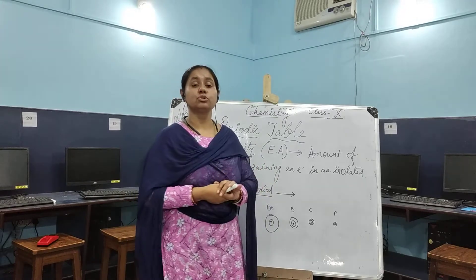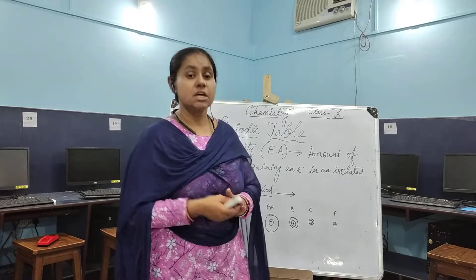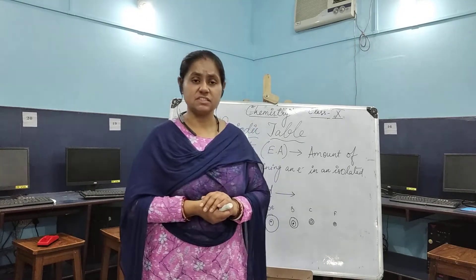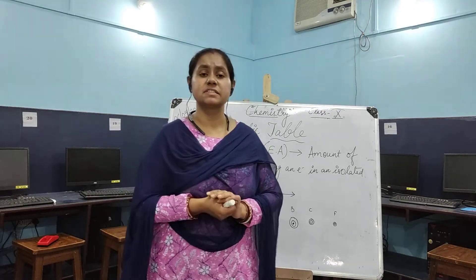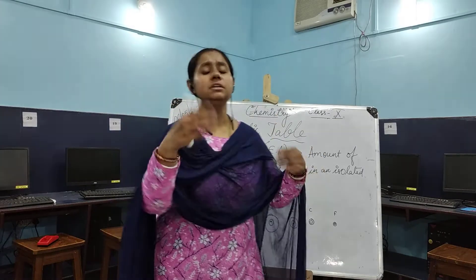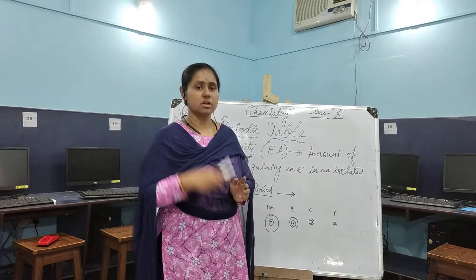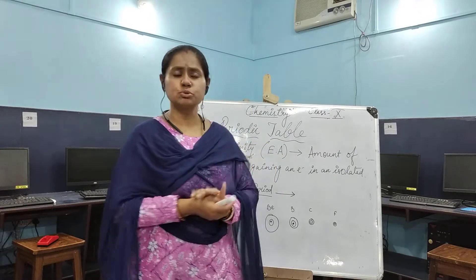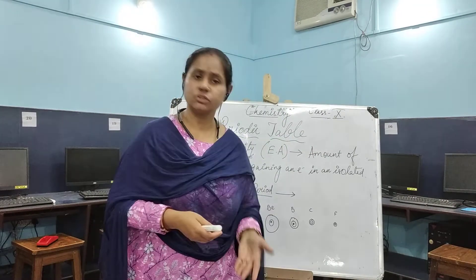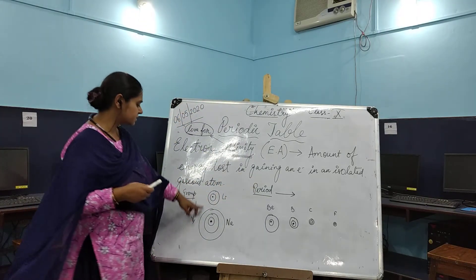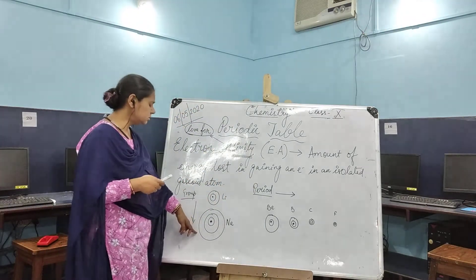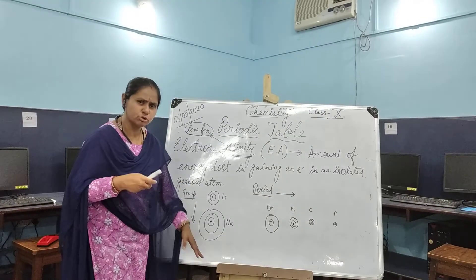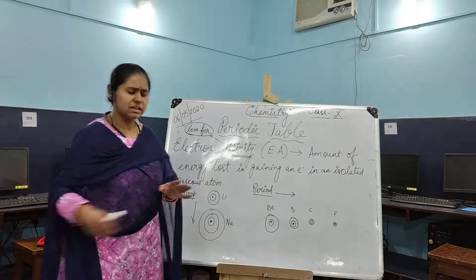Then I have taught you about the periodic properties. Periodicity in properties generally arises as a result of similar type of valence shell structure. Once an element belongs to a particular group, it has the same valency. If you look at group 1, you have lithium, sodium, followed by potassium, rubidium, cesium.